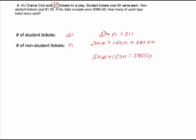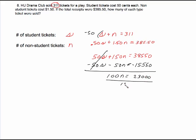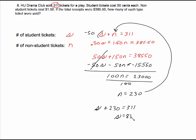I'm going to use elimination. I'm going to multiply this by negative 50, which is negative 50S minus 50N equals negative 15550. The S's cancel out. This is 100N equals 23,000. So we're going to divide both sides by 100, so N works out to be 230. So 230 non-student tickets were sold. To find out the number of student tickets, take this 230, plug it back in here. You're looking at S plus 230 equals 311. So subtract 230 from both sides, and S is 81. So 81 student tickets, 230 non-student tickets.